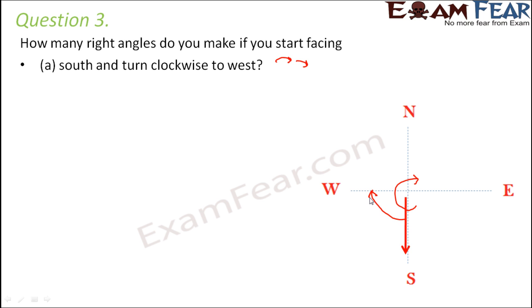And then you turn clockwise towards west, so you need to reach till here. So from here till here, how many right angles do you make? So from south to west in this direction, how many right angles are involved? Only one right angle. So let's see how it would move - it would move like this from south to west. So how many right angles did we cover? We covered one right angle.